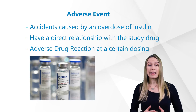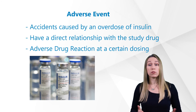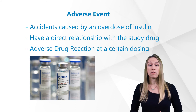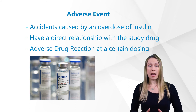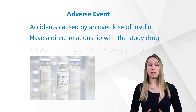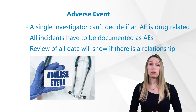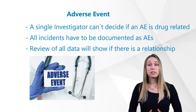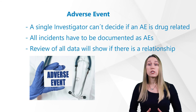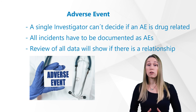Finally, all the recorded AEs show that there are several patients in the study having accidents caused by an overdose of insulin. So all these accidents have a direct relationship with the study drug — they are not only AEs, but also adverse drug reactions of the study drug at a certain dosing. This shows clearly that not a single investigator can decide if an AE is drug related. All these incidents have to be documented as AEs. Only after review of all the data will it show if there is a relationship to the study drug. Therefore, investigators have to understand that it is important that everything be documented correctly, even if it initially seems that there is no obvious relationship.